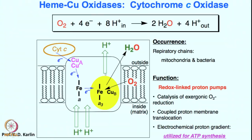For instance, the cytochrome C oxidase — which is nothing but heme copper oxidase — can convert oxygen into water, a very difficult transformation that requires 4 electrons and 4 protons overall. By doing so, it participates in the proton gradient creation, and overall this is a very important transformation in nature.